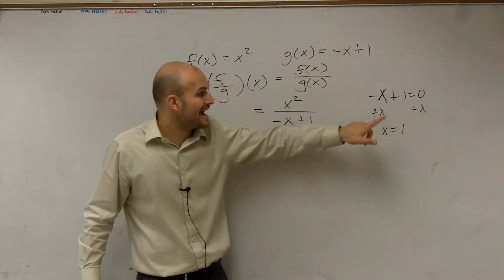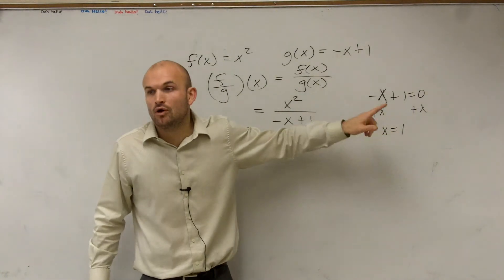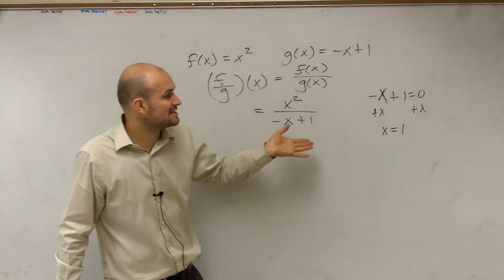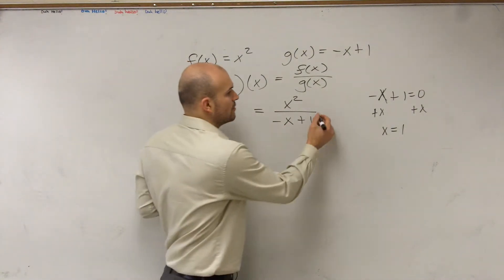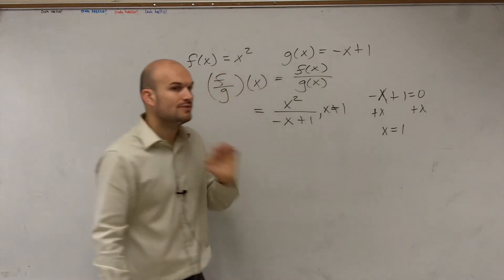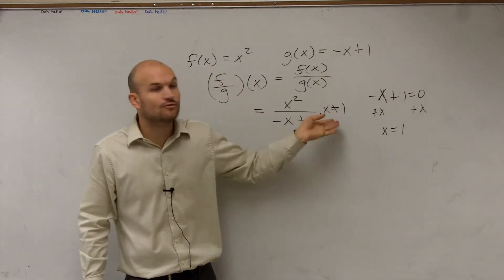So therefore, we can say that x cannot equal 1. Because if you divide, you can't simplify the division any further, but now we need to understand that x cannot equal 1. So what we do is we just put a constraint. x cannot equal 1. You have to make sure when you're dividing, you have to write in that constraint.